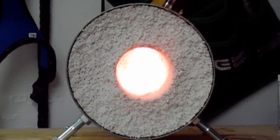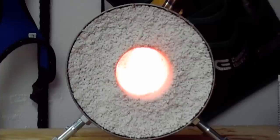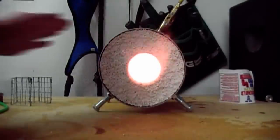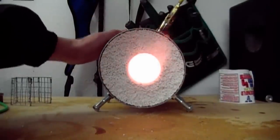As you can see, the forge heats up very fast. The sodium silica is binding the perlite particles together nicely. Despite the intense heat, the outside is still cool to the touch.